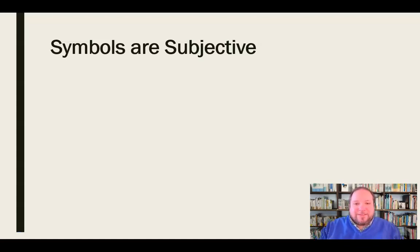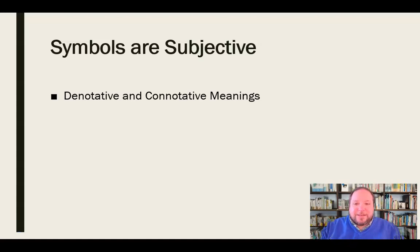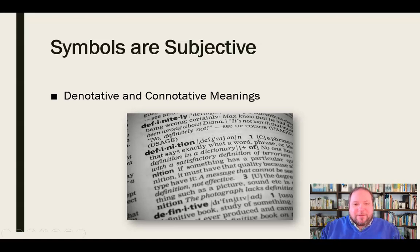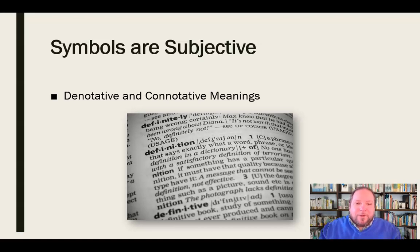The meaning rests in the person who is interpreting and determining what it means. As part of this, we need to understand that all symbols have both a denotative and a connotative meaning. The denotative meaning is what we would call the dictionary definition of that word or symbol — the kind of universally identified meaning of that particular symbol, word, or expression.